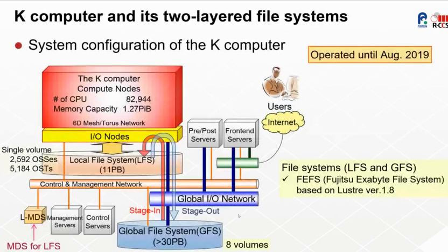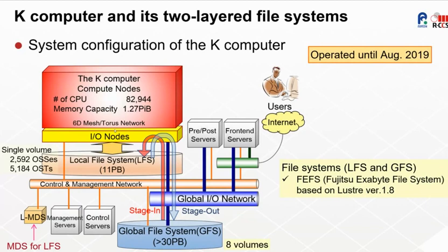Before speaking about our framework, I'd like to briefly explain the K computer configuration. The K computer was operated until the middle of August last year, and now we are switching to Fugaku preparation. The system has about 80,000 compute nodes and associated IO nodes. At the file system side, the system has a two-layer file system: a local file system LFS and a global file system named GFS. The LFS is dedicated for local IO operations during computation, while the GFS was dedicated for storing programs or data of users.